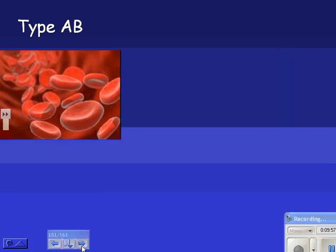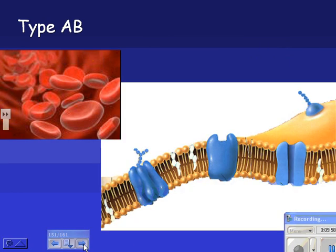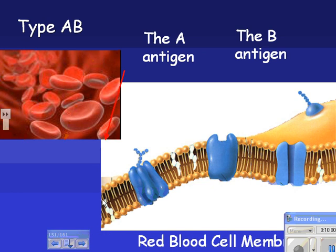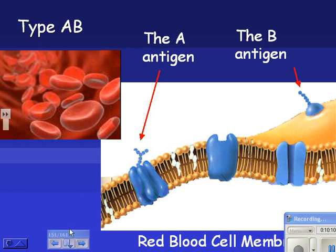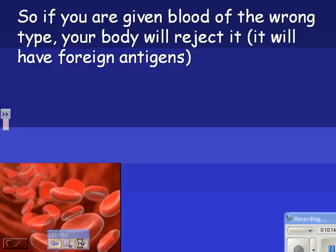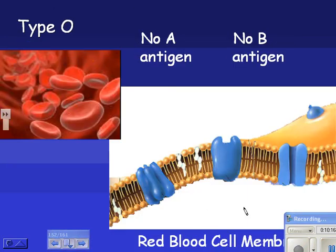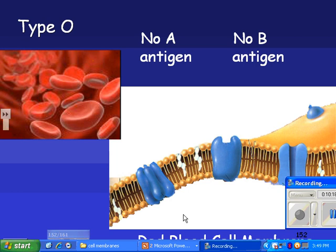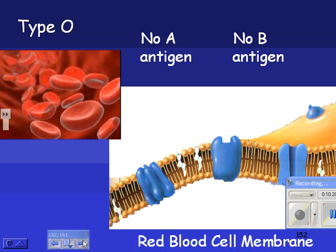If you're type AB, you will have both — an A antigen and a B antigen. There's no such thing as an AB antigen; type AB blood simply means you have both the A antigen and the B antigen. And if you're type O, you have no antigen A and no antigen B. So they are red blood cells without ID tags of this type — they might have other antigens, but not the AB type.